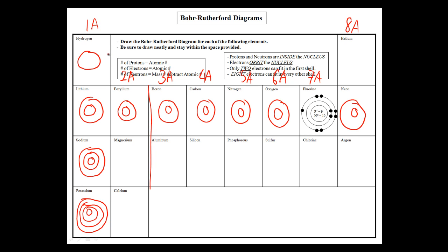We've already talked about the first trend: as we go down each group, you increase the number of shells. So this element in period one has one shell. This whole period two has two shells. Period three should all have three shells. Period four should all have four shells — if you have drawn your Bohr-Rutherford diagrams correctly.